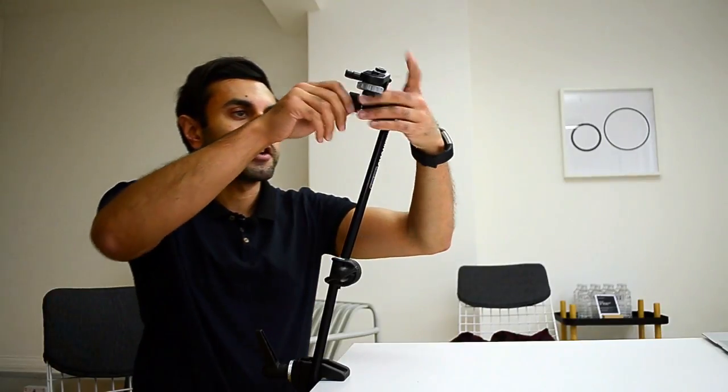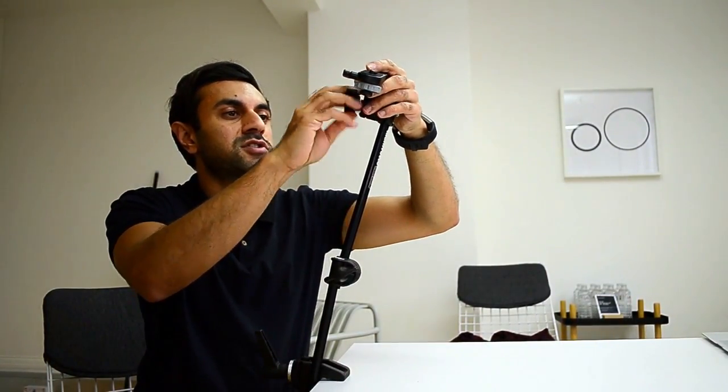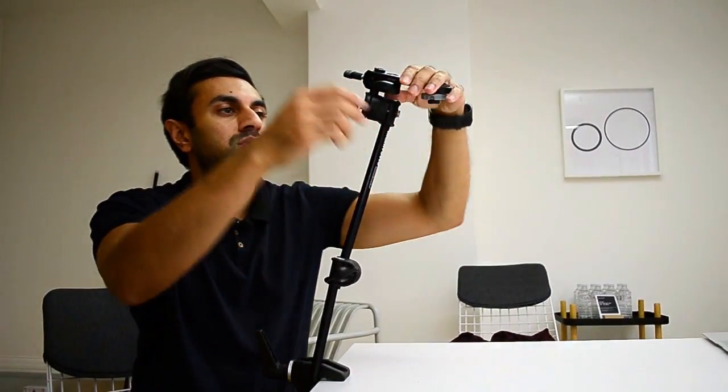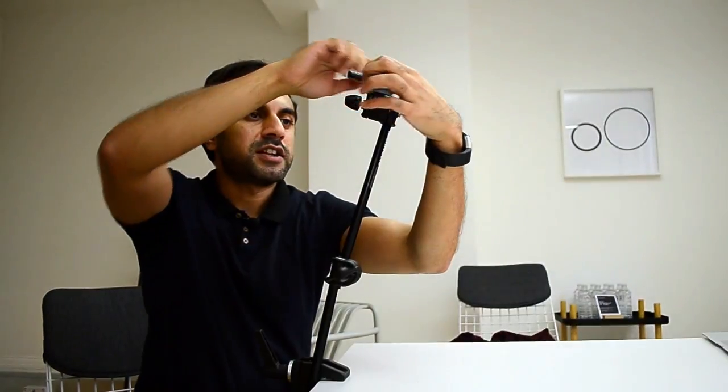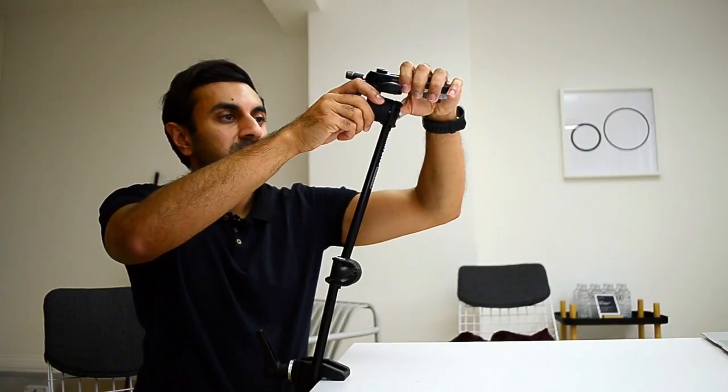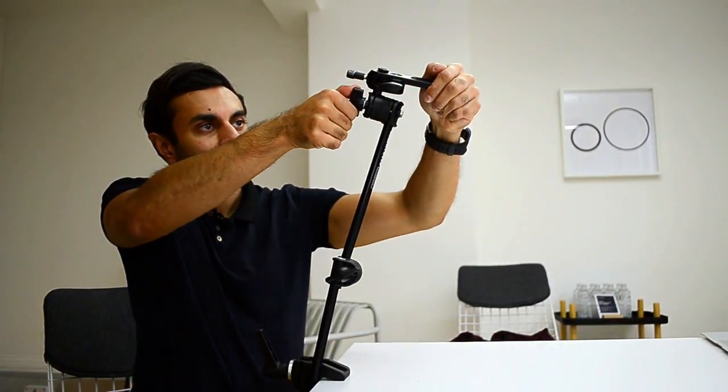Now coming back to the second arm there's a knob here at the top. This allows you to shift the actual camera stand left and right, so whichever way you want to face it. Let's face it this way. I'll tighten it like so.